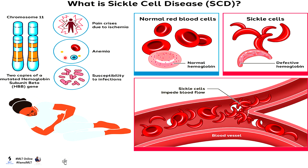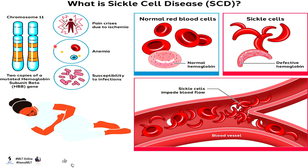Sickle cell anemia causes red blood cells to take a sickle shape due to a mutation in chromosome 11. A single point mutation in chromosome 11 leads to an abnormality in the hemoglobin.